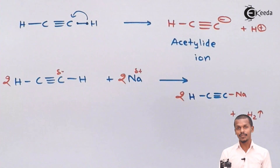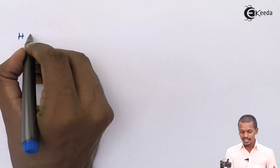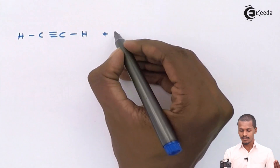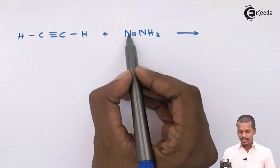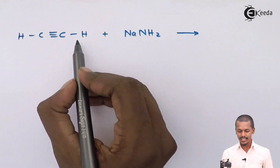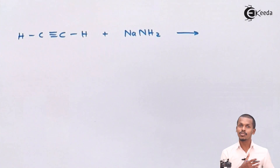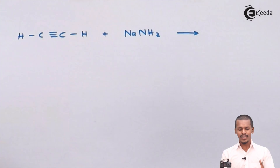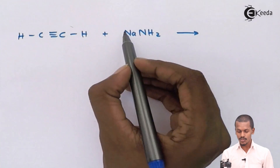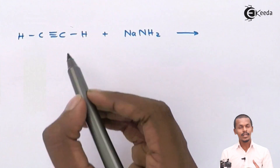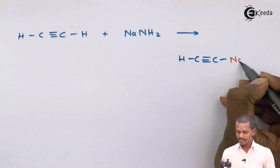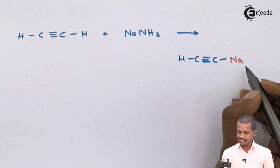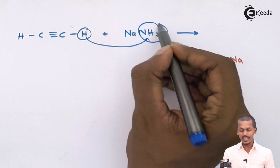What happens if we react with a base like NaNH2? Suppose ethyne is reacted with sodium amide. Because of the liberation of one hydrogen atom — this is the acidic hydrogen atom attached to the carbon atom which is showing acidic property — the carbon will attract electrons towards itself. So sodium takes the place of hydrogen to form HC≡C-Na, that is sodium acetylide.